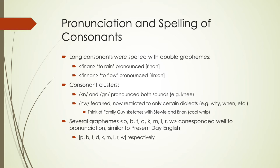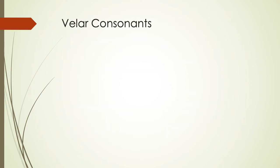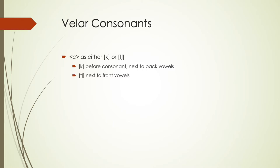There are some different allophone distinctions that are important to note when thinking about what this sound system actually looks like. If we think about our velar consonants, the spelling of the letter C in Old English can be pronounced a couple different ways — it might sound like a 'k' (velar) or like a 'ch.' Most of the time it's a 'k' — before a consonant or next to back vowels — but it'll be 'ch' next to front vowels, so palatalization is happening when it comes next to those front vowels.